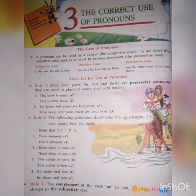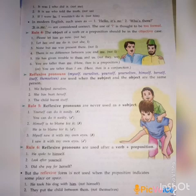Examples for Rule 3: 'It was I who did it' — not 'me.' 'It is we who told the truth' — not 'us.' In modern English, however, such uses as 'Hello, it's me' have become accepted, whereas old English required 'Hello, I am Rachel.'